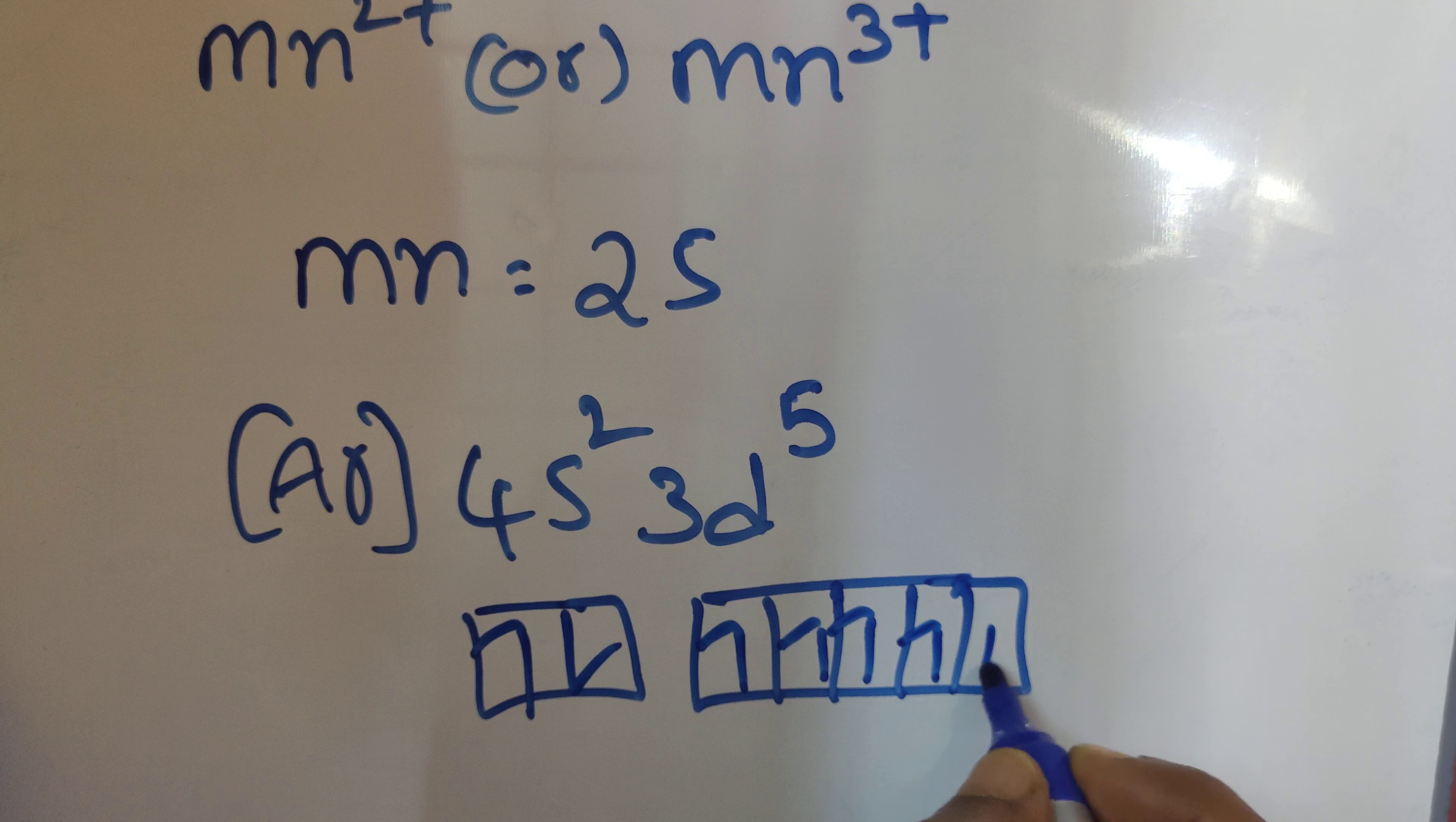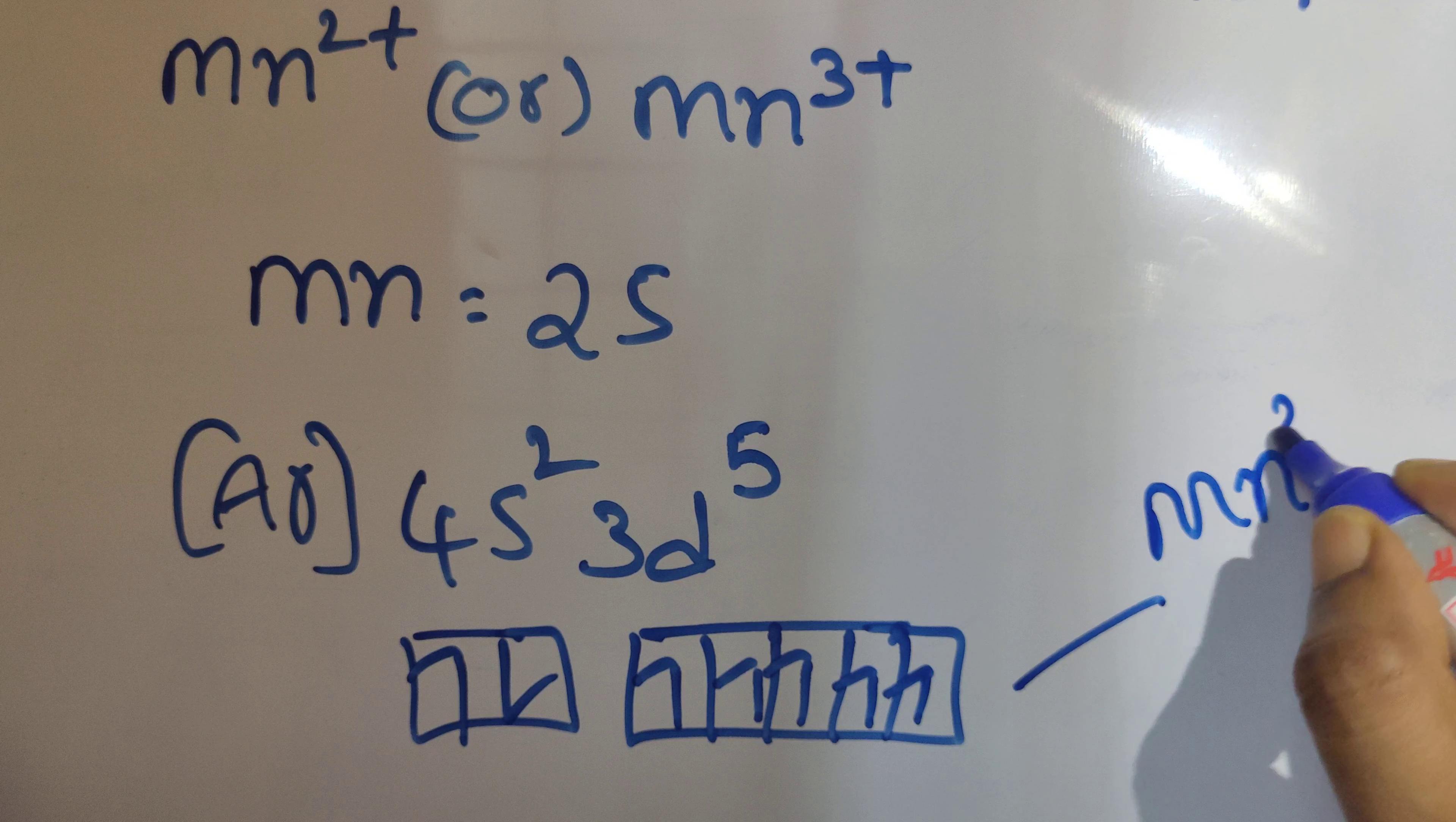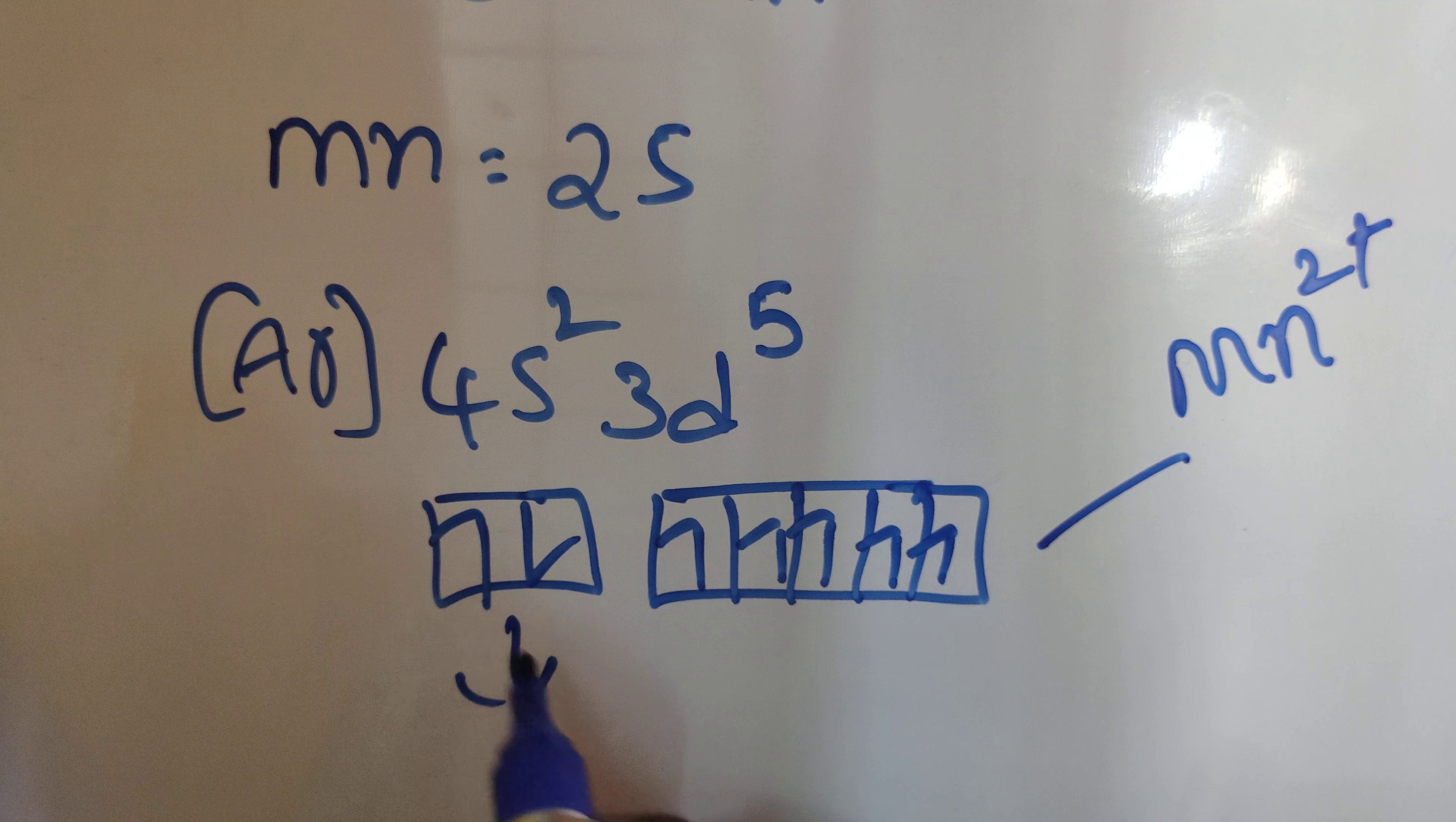In this case, Mn²⁺, what will happen? 2+ means we have to remove two electrons. These 4s electrons we are removing, so 1, 2, 3, 4, 5. This is half-filled.